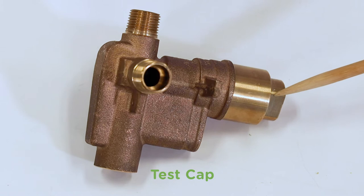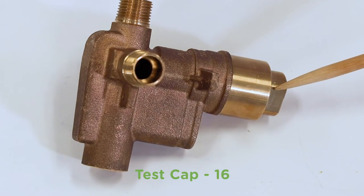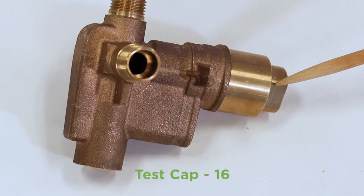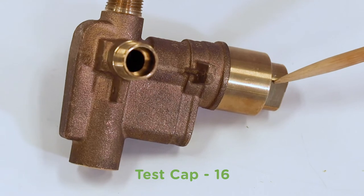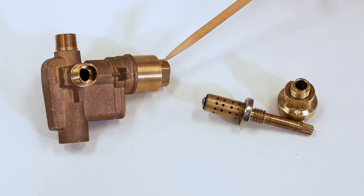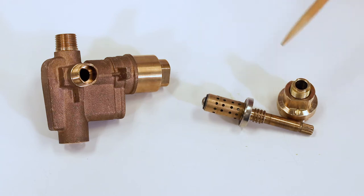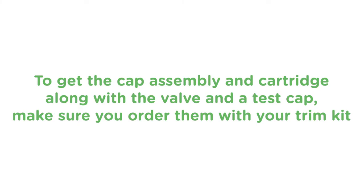Valve numbers that begin with the numbers 16 indicate that the valve will come fitted with a test cap in place of the spindle and cap assembly. One thing to note on this option: the test cap is used for testing the plumbing system after installation, and the spindle and cap assembly must be ordered separately and installed after testing is complete.